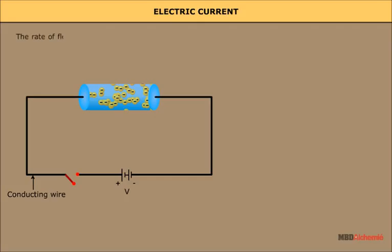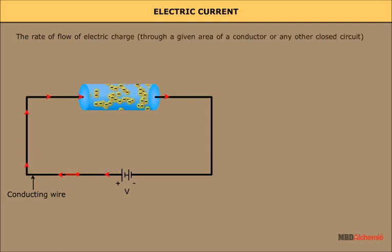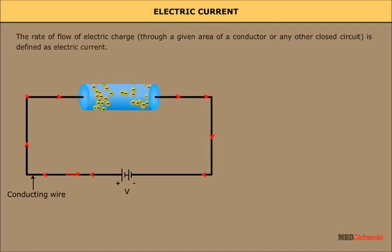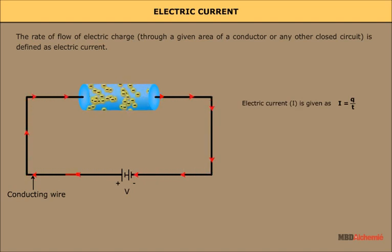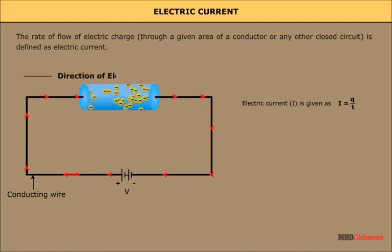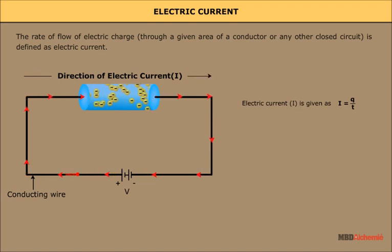Electric Current. The rate of flow of electric charge through a given area of a conductor or any other closed circuit is defined as electric current. Electric current is given as I is equal to Q divided by T. The direction of the flow of positive charge gives the direction of electric current.